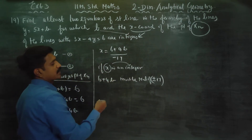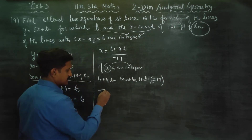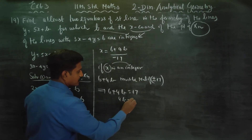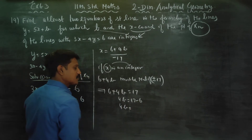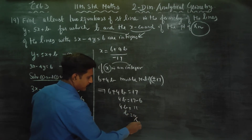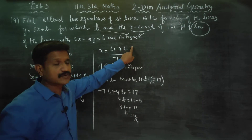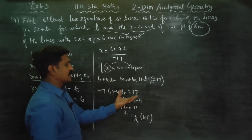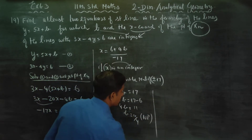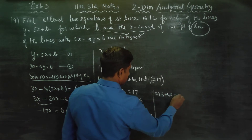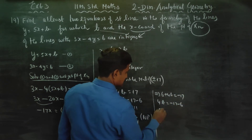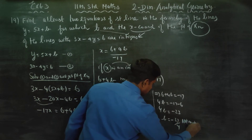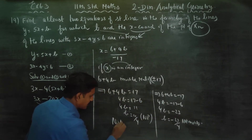Try: 6 + 4b = +17, so 4b = 17 − 6 = 11, giving b = 11/4 — not an integer, so this is not possible. Try: 6 + 4b = −17, so 4b = −17 − 6 = −23, giving b = −23/4 — also not an integer. So the first multiple of 17 gives no valid integer value of b.